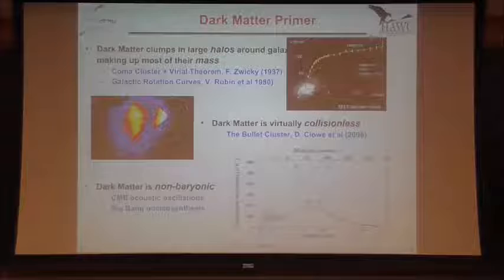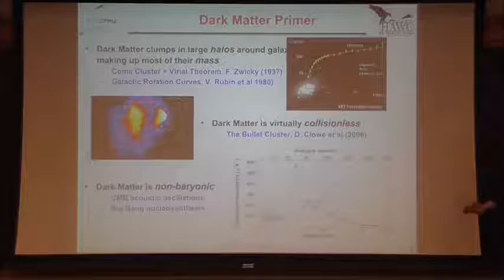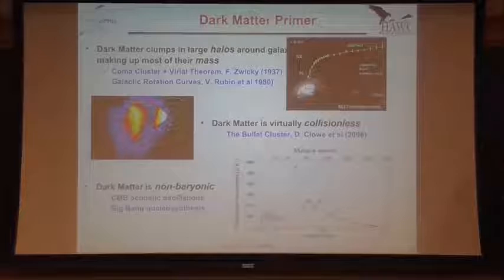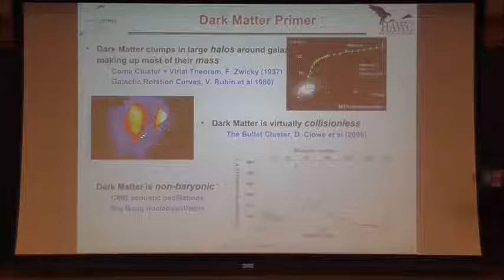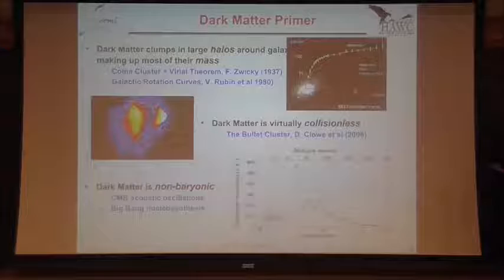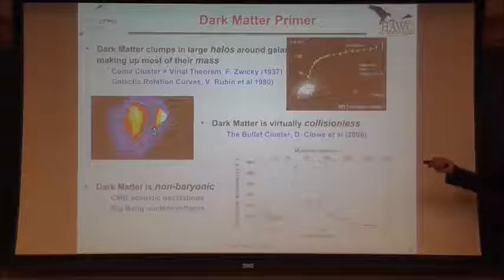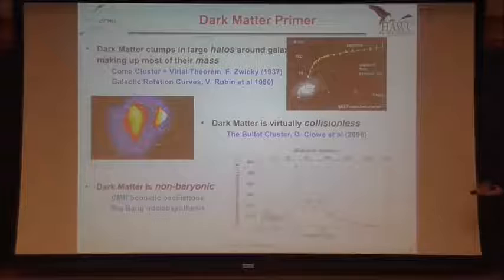Then we get the bullet cluster — a very famous dark matter observation where you have two galaxy clusters merging in the plane of the sky. What you saw in this object is a separation of the dark matter making up most of the mass and the normal baryonic matter that shines bright in X-rays. The green contours show where all the mass is, while the bright spots show where the X-rays are. There's a clear separation, telling us that dark matter went through and barely interacted. We know that dark matter is virtually collisionless.